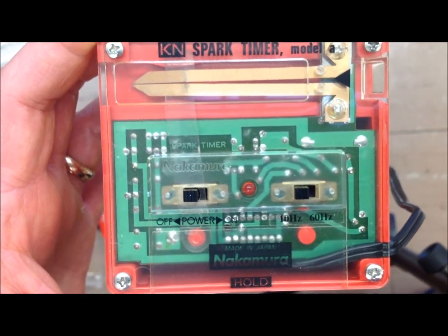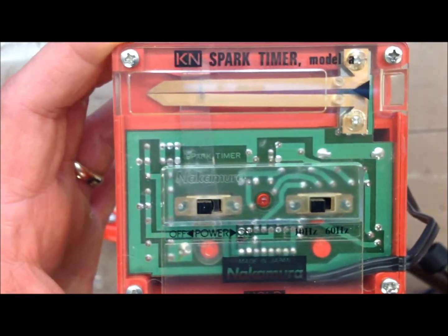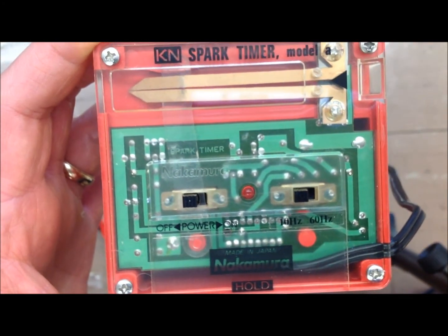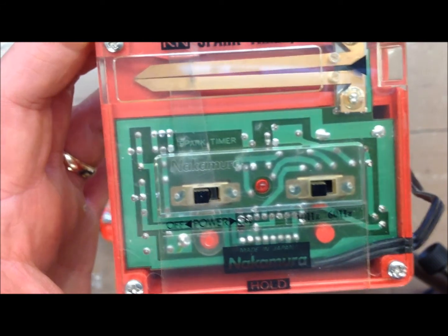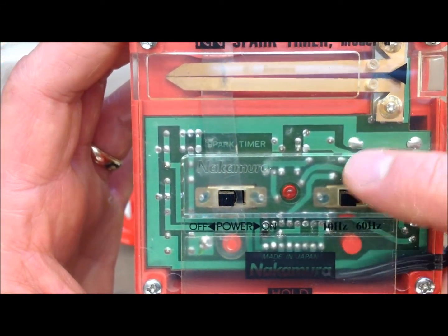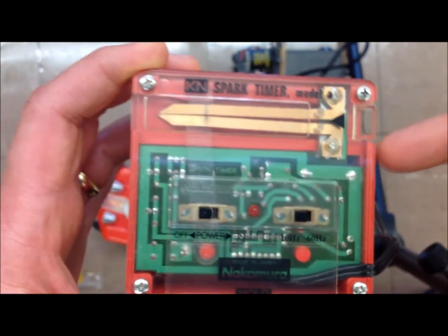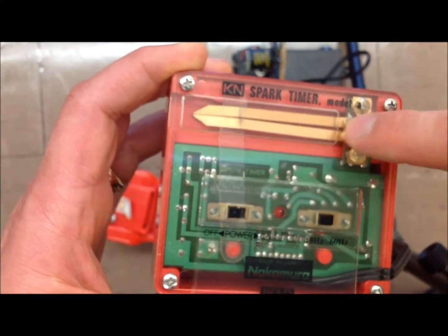For today's lab activity, we're going to use a spark timer. All our spark timers don't look exactly the same, but they're all similar to this. They all have a 10 hertz and a 60 hertz setting. We want to be on the 10 hertz, and then they have an on-off power, and then here you have a metal strip that's your actual spark timer.